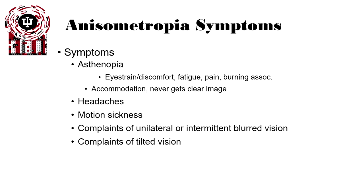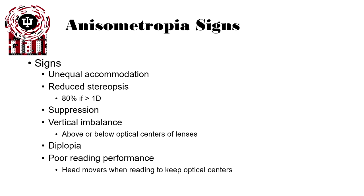Some symptoms of people with anisometropia include asthenopia — eye strain or discomfort, pain, fatigue, and burning sensation. Sometimes accommodation cannot get the image clear. They also tend to have headaches, motion sickness, complaints of unilateral or intermittent blurred vision, and complaints of tilted vision. Signs of anisometropia include unequal accommodative response, reduced stereopsis, suppression of one eye, vertical imbalance, diplopia, and poor reading performance.